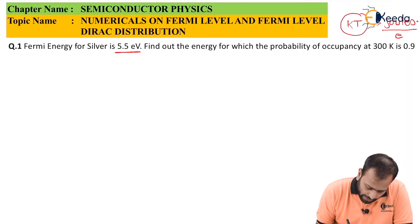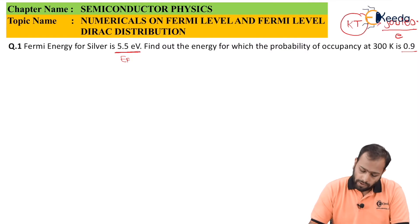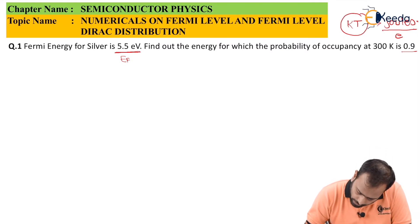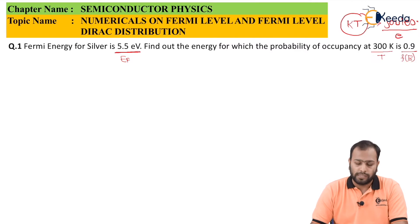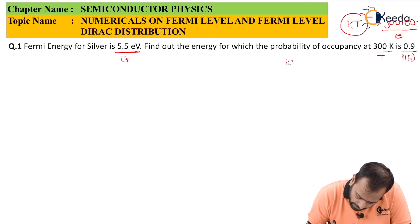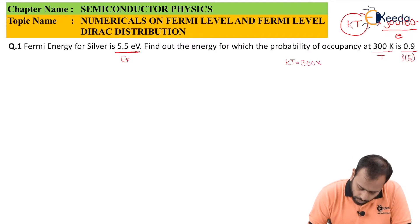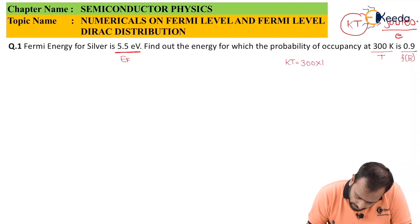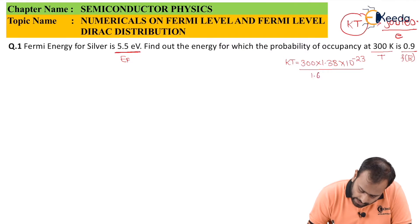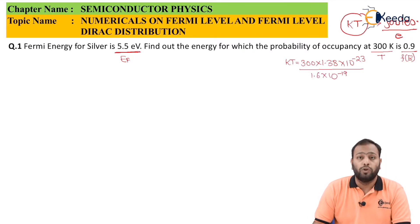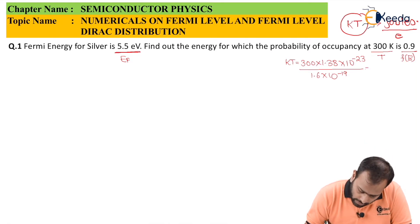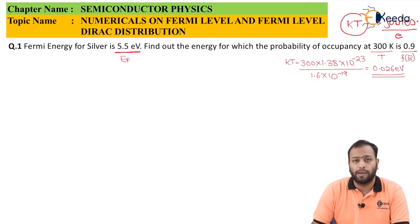Usually the Fermi level energy will be given in electron volts. So whenever you want to convert joules to electron volts, always make sure to divide by E, that is the charge of the electron. Now, the Fermi level EF is 5.5 eV, the probability of occupancy F(E) is 0.9, and the temperature is 300 Kelvin. The first step is finding KT in terms of electron volts: KT = (300 × 1.38×10⁻²³) / (1.6×10⁻¹⁹) = 0.026 electron volt.